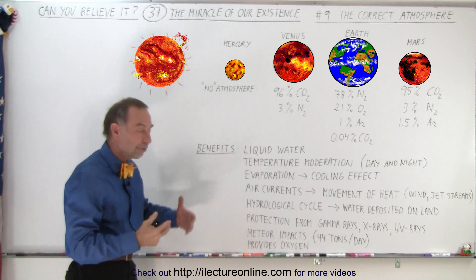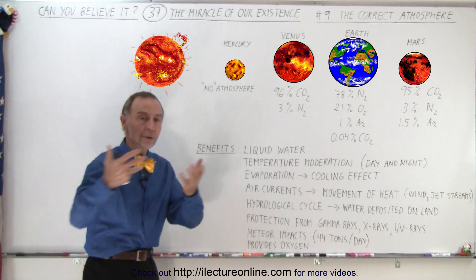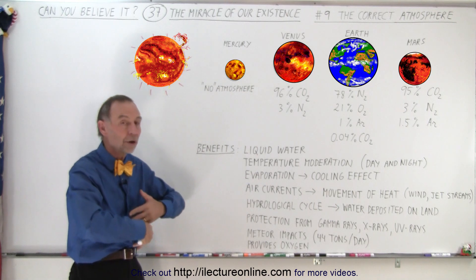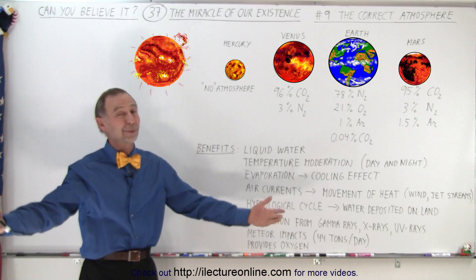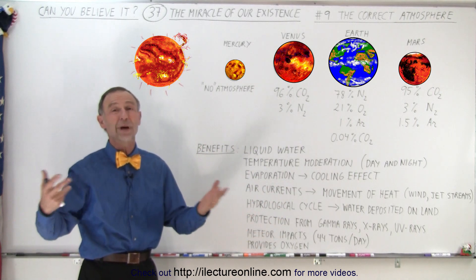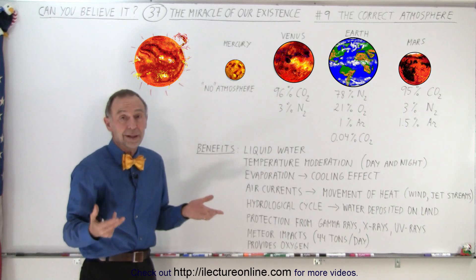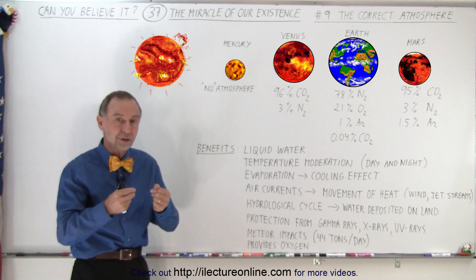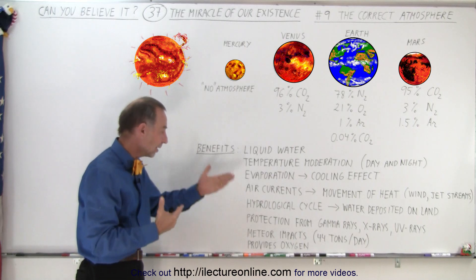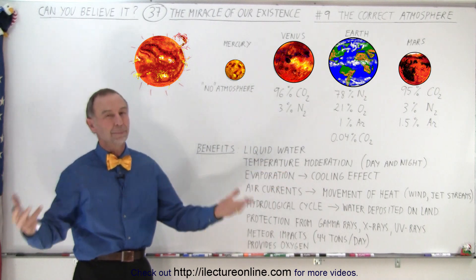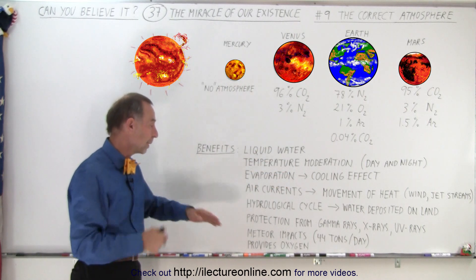Because we have water vapor in the atmosphere and the movement of these air currents, we have what we call the hydrological cycle where water is then deposited on land. If we didn't have that, our land would be like the Sahara Desert everywhere with no rain anywhere. If there was no rain anywhere, life couldn't simply not exist on land, but because we have the right atmosphere with the right contents and the hydrological cycle, we have plenty of water in many places around the world for us to be able to live.